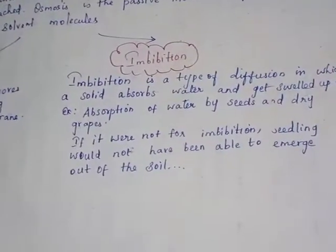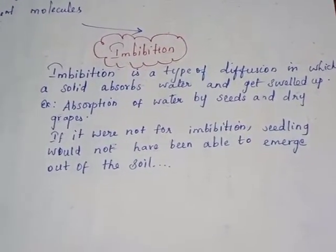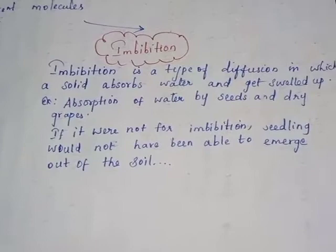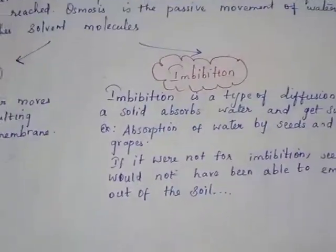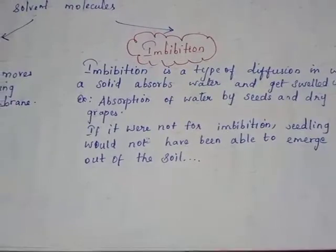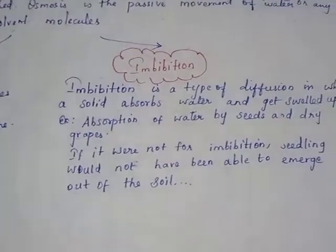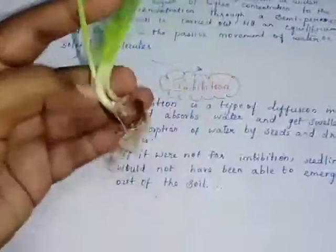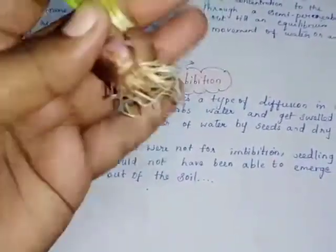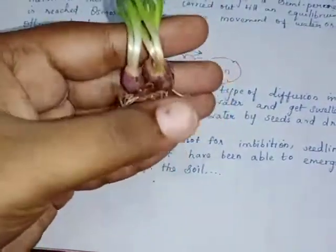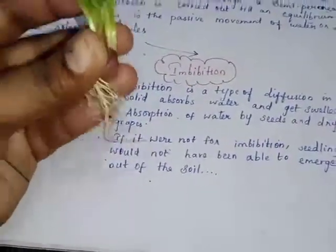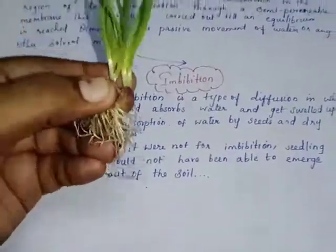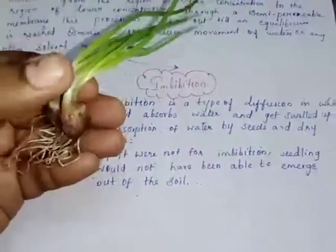Here also there is no energy. Imbibition is a type of diffusion in which a solid absorbs water and gets swollen. Examples of imbibition include absorption of water by seeds and dry grapes. This is an onion plant — water is absorbed by this seed and it grows well. This is imbibition. If it were not for imbibition, the seeds would not have been able to emerge out of the soil.